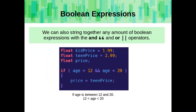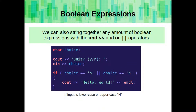We can also string together any amount of Boolean expressions with the AND and OR operators. Here, we are checking whether the age variable is between 12 and 20. And here, we are checking whether the user's choice was a lowercase n or an uppercase n.